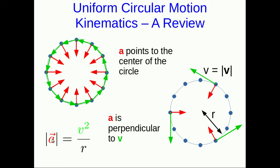We saw that the magnitude of the acceleration vector is a constant, and it turns out to be v squared over r, where v here is the speed.